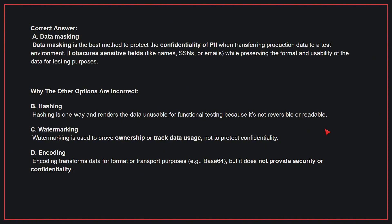Why the other options are incorrect? B. Hashing. Hashing is one-way and renders the data unusable for functional testing because it's not reversible or readable.